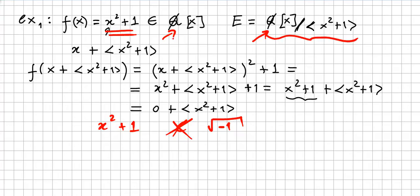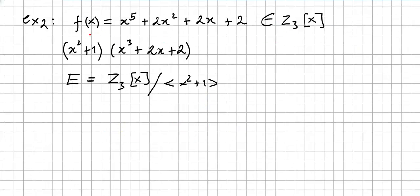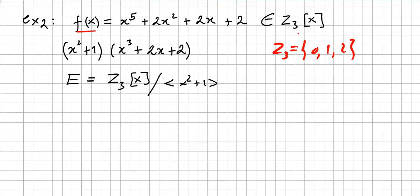So we are working only with the field that we are given. Another example: let's take the polynomial x to the power of 5 plus 2x squared plus 2x plus 2 in the ring of polynomials over Z₃. The irreducible factorization of this polynomial is x squared plus 1 times x to the power of 3 plus 2x plus 2.